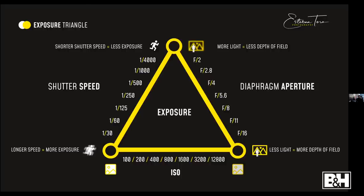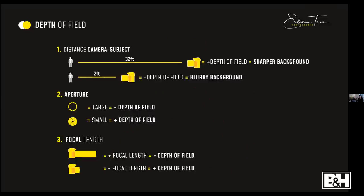I want to emphasize something we were discussing about aperture — we said that if we open the aperture we have less depth of field. So what is depth of field? We will finally talk about that. Basically, depth of field is the level of focus you have from the subject to the background and from the subject to the foreground to the camera. There are three things that really change how your depth of field will look like.